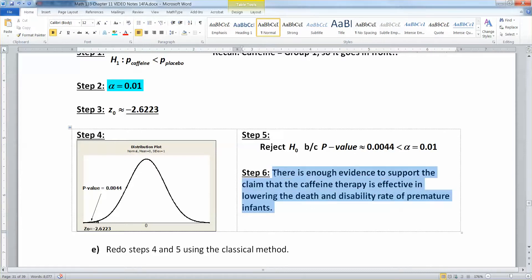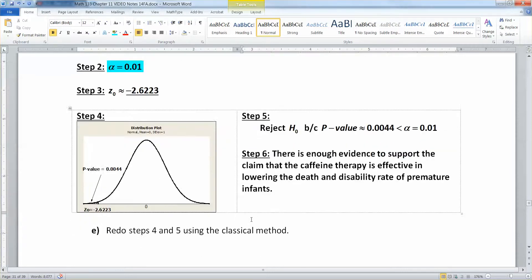But even with that, our P value is below it. So we're rejecting the null hypothesis. That means that there is enough evidence to support the claim that the caffeine therapy is effective in lowering the death and disability rate of premature infants. Now we could be wrong, but that's what it appears.